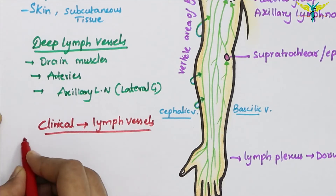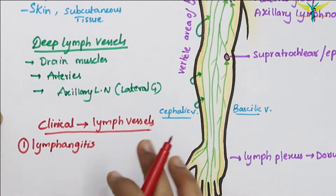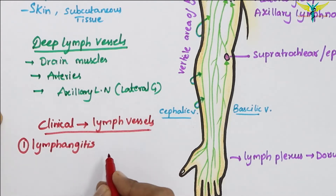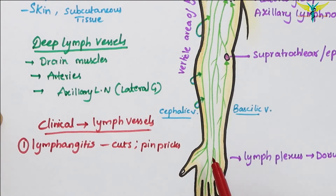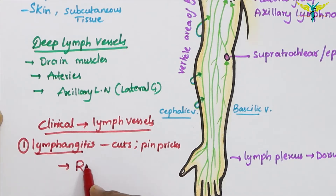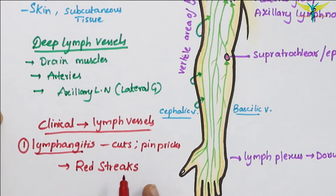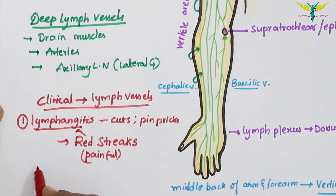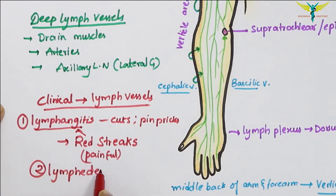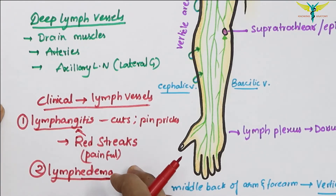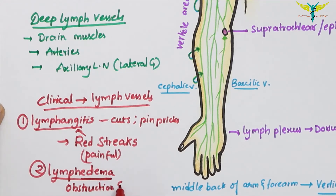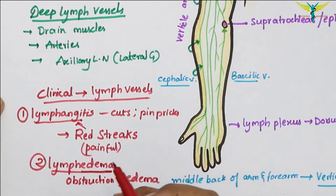For clinical correlation of the lymph vessels: the first condition is lymphangitis, which is inflammation of the lymph vessels. It usually follows injuries such as cuts or pin prickings to any part of the upper limb. In acute cases, the lymph vessel may be seen underneath the skin as red streaks that are tender or painful to touch. The second condition is lymphedema — obstruction of the lymph vessels causing edema due to accumulation of tissue fluid.